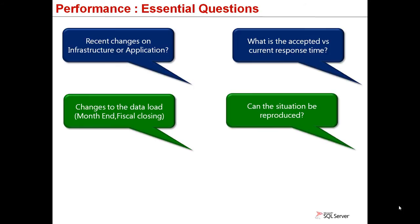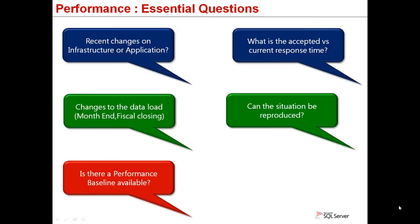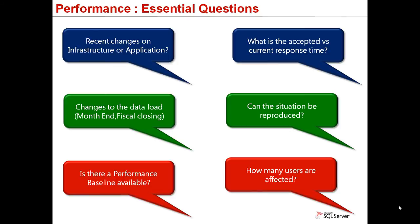Ask if the situation can be reproduced — for example, if the client is having performance problems with a stored procedure that only displays data. If it can be reproduced at any time, it's a very good way to start, so we can monitor the environment in real time while the problem is happening. Check if there is any performance baseline available. By having metrics on performance counters such as memory or CPU utilization, it gets easier to compare data from before and after the problem started. If there is no baseline available, then it's a good moment to start one. Finally, a classic but not-to-be-missed question: how many users are affected? This might look simple, but it's a question that can save you a lot of time since it isolates the performance condition to a specific group of users.